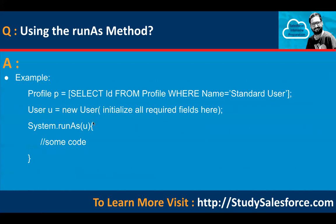To use runAs, query the profile and create a user, initializing all required fields of the user object. That newly created user can then be used in System.runAs(u), and whatever code you write inside those braces will run in the context of that newly created user.